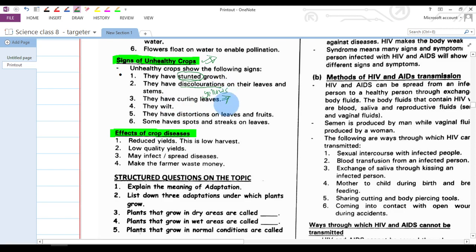They have curling - leaves that are not straight, as if they are curved. That is another sign of unhealthy crops. They wilt. They have some distortions on leaves and fruits. You see the fruits as if they have dark spots. That is an example of unhealthy crop fruits and leaves. Some have spots and streaks on the leaves, so that means that plant is unhealthy.